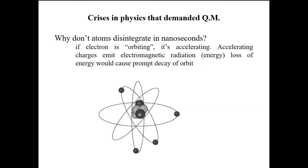The first crisis was the question: why don't the atoms disintegrate? It is because if the electron is orbiting around the nucleus then it is in acceleration. Because the velocity of electron in motion in circular or elliptical path is changing at every point of path.